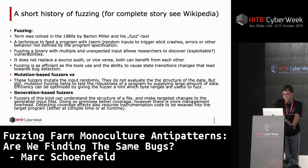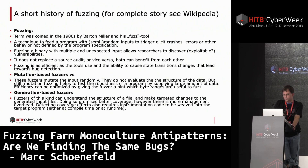Generation-based fuzzers are tools that know how the structure of a file or protocol is made up, so you can make targeted changes from the outset, which promises better coverage. However, there is more management overhead because you need to know the setup with a grammar file. You also need PID files, and detecting coverage requires instrumentation woven into the target program, either at compile time or at runtime — for example, the QEMU mode of AFL.